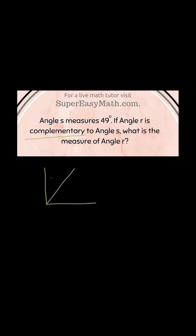Well, the problem is telling us that angle S, let's call this angle S right here, is 49 degrees. And they want us to figure out the measure of angle R. Well, all I need to do is take my 90 and subtract 49, and I'm going to get 41.